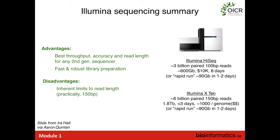To summarize Illumina sequencing: it has the best throughput by far of any available sequencer — I've written 600 gigabases for an Illumina run here, but it's now with NovaSeq up to over a terabase for a $10,000 to $15,000 run. The accuracy is the best of any sequencing technology because the cluster of molecules gives a lot of redundancy in the signal to accurately call bases. The error rate is less than one percent, maybe around one in two hundred bases. The sequencing technology is also pretty robust, with library preparation methods well-worked out for reproducibly good data.